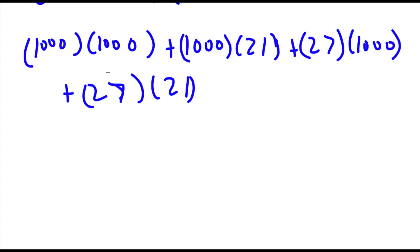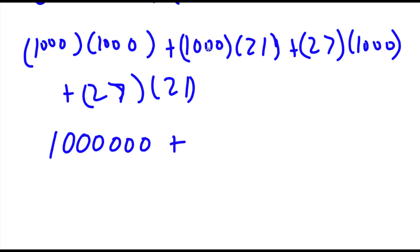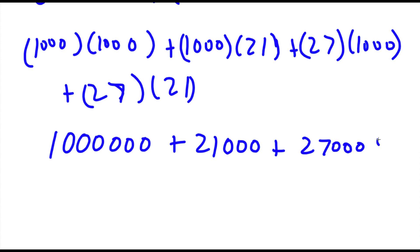So 1,000 times 1,000 is 1,000,000. Plus 1,000 times 21 is 21,000. Plus 27 times 1,000 is 27,000. And finally 27 times 21: 7 times 1 is 7, 2 times 7 is 14 carry the 1, 2 times 2 is 4 plus 1 is 5, giving us 567. So now I have 1,000,000 plus 21,000 plus 27,000 plus 567.